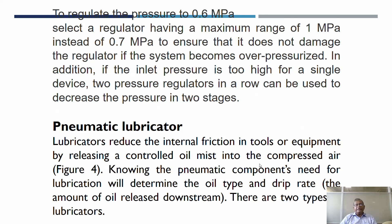Next is the pneumatic lubricator. The main purpose of a lubricator is to reduce friction and increase the life of moving components. Lubricators reduce the internal friction in tools or equipment by releasing a controlled oil mist into the compressed air. Knowing which pneumatic components need lubrication will determine the oil type and drip rate — the amount of oil released downstream. There are two types of lubricators.